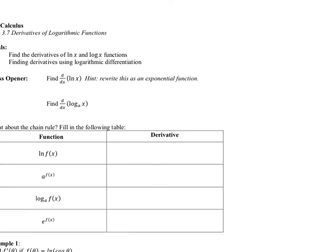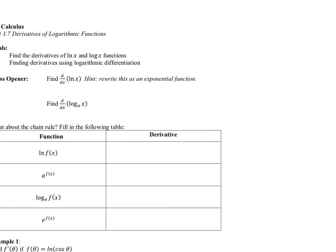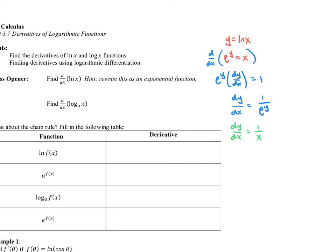I'm going to show you quickly where the derivative of natural log of x comes from — you probably saw it in AB but may have since forgotten it. We'll start with y = ln(x) and rewrite it as e^y = x, then take the derivative of both sides with respect to x. We get e^y · (dy/dx) = 1 by implicit differentiation. Solving for dy/dx gives 1 divided by e^y, and since e^y = x, we get dy/dx = 1/x.